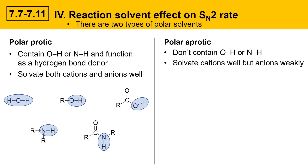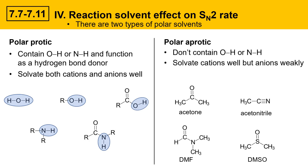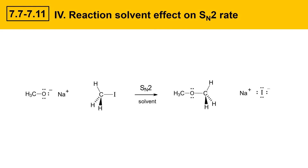We'll contrast that now with polar aprotic solvents, which are defined by not containing an OH or NH. They solvate cations well, but anions weakly. Here are four examples of some common polar aprotic solvents: acetone, acetonitrile, dimethyl formamide or DMF for short, and dimethyl sulfoxide or DMSO for short. These solvents are all polar — they have large dipole moments, but they don't have any OH or NH groups.